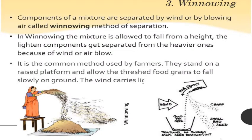Threshing is followed by winnowing. Winnowing is actually a separation technique where heavier grain particles and lighter chaff are separated using air. Components of a mixture separated by wind or blowing air is called winnowing. Farmers stand on a raised platform and allow the threshed grains to fall slowly to the ground. The wind carries away the lighter chaff particles, helping the farmer to separate the grains.